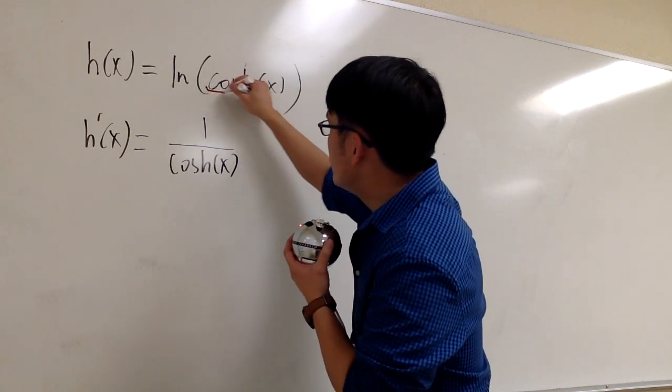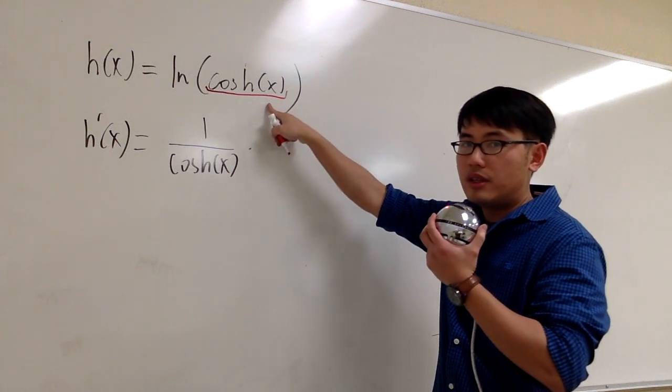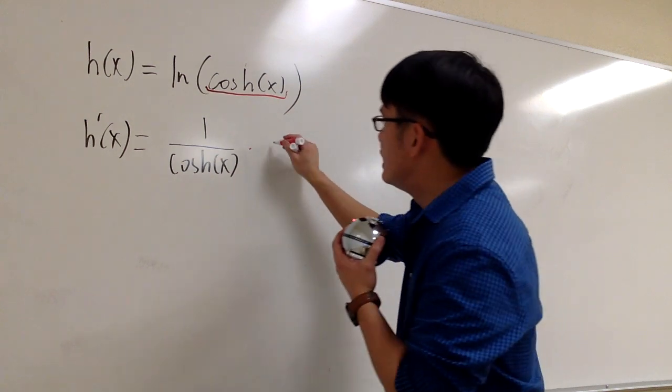And then you look at the inside function, which is cosh(x), and by the chain rule, you multiply by the derivative of the inside function. Derivative of cosh is sinh(x).